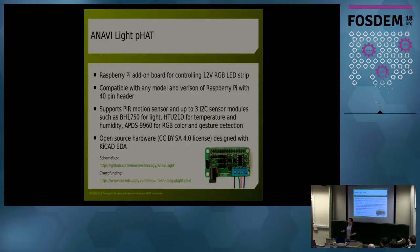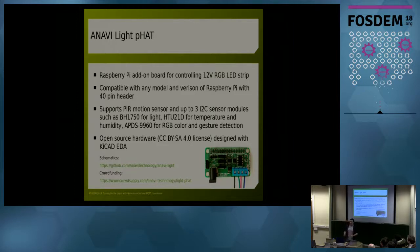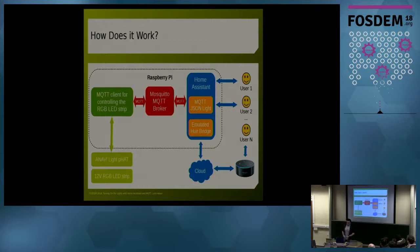Yesterday I had a talk which focused more on the hardware side of things. Today I'm doing a little bit deeper dive into the software. This is an add-on board that works with any model and version of Raspberry Pi with a 40-pin header. It has an EEPROM with a device tree fragment on it. Furthermore, it has slots for sensors like a PIR motion sensor or various I2C sensor modules for detecting light, temperature, humidity, or even gestures. The schematics are available on GitHub. I'm also running a small crowdfunding campaign on CrowdSupply, which is a great platform for open source hardware products. All of the components you see here are open source, including the hardware that I have designed.